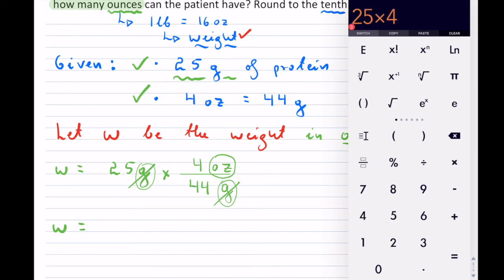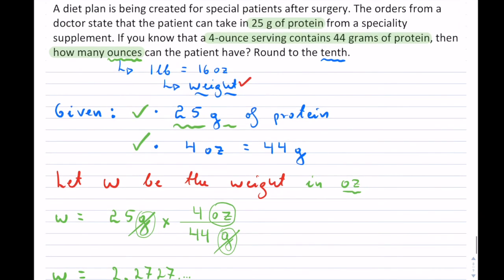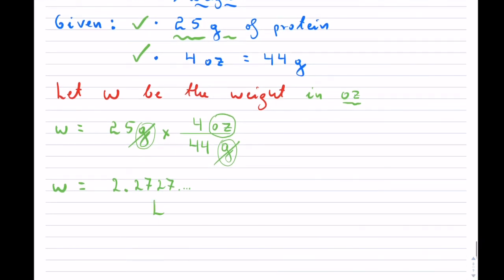So I have 25 multiplied by 4, so that's 100. And then 100 divided by that 44, and that is equal to 2.2727. I guess it's a repeater there. And I want the answer to the tenth. So if we were measuring this up, this would be 2.3 ounces of the supplement.